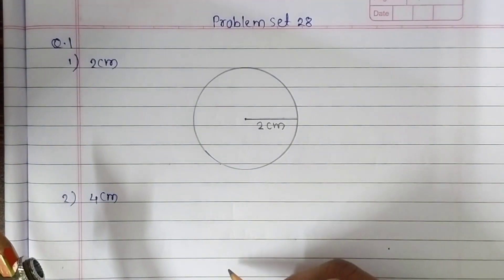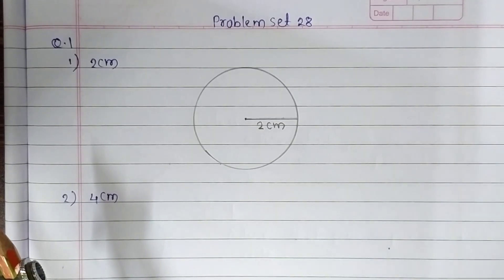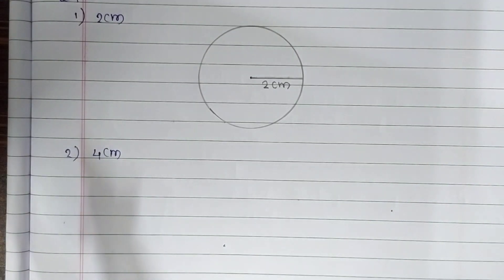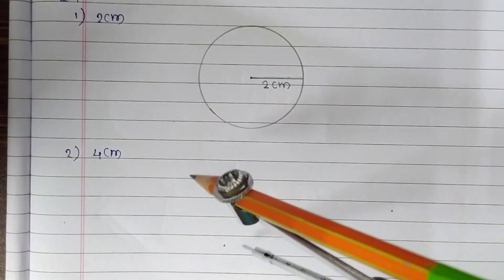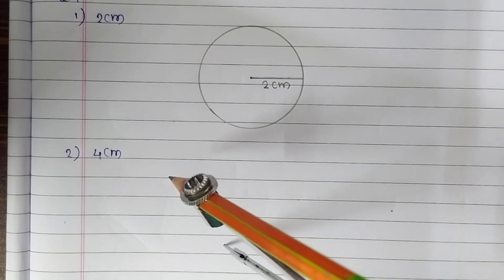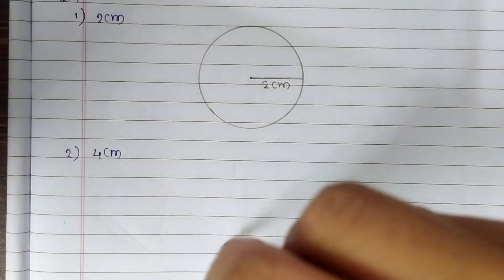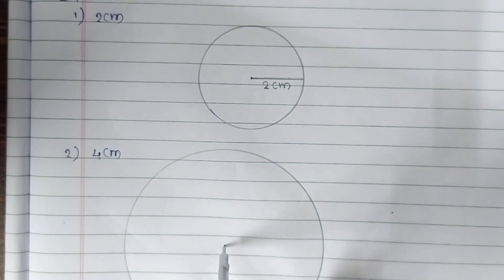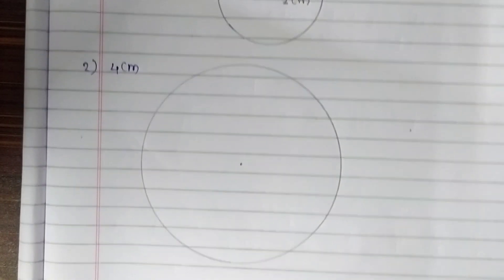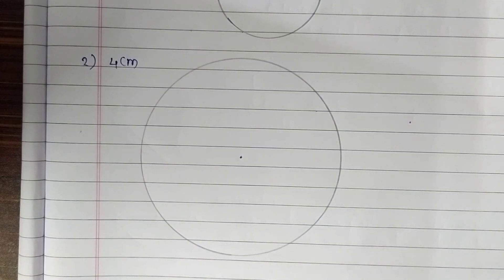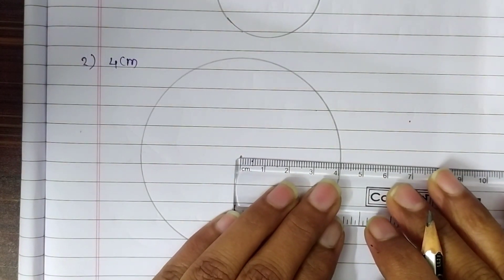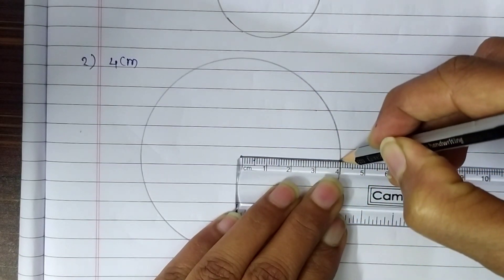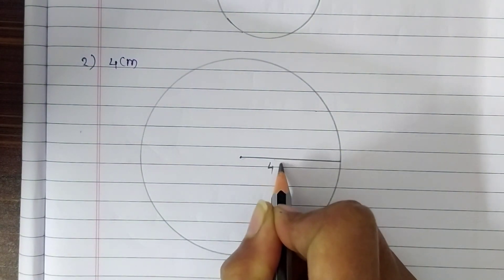Now take a point anywhere on the sheet of paper. I am going to take the point here. This is the center point of the circle. Now place the metal point here and keep it steady. Our circle for 4 centimeters is ready now. Just draw a radius here and write 4 centimeters.